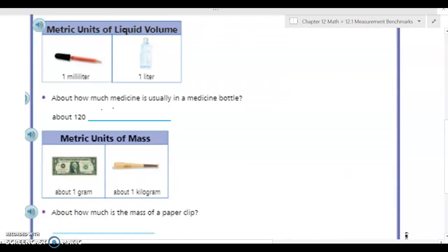So we have a milliliter, which is a pipette. We've used those in science before. It holds a small amount of liquid, like an eyedropper. We also have a liter, which is about a large water bottle. Another way I like to think about liters is pop comes in two liter bottles, so think of two of them, that's two liters. So about how much medicine is usually in a medicine bottle? Well they tell us it's about 120 something. So I have to decide if it's milliliters or liters. Well I know medicine bottles are much smaller than water bottles, so it's going to be probably milliliters. So a medicine bottle is about 120 milliliters.